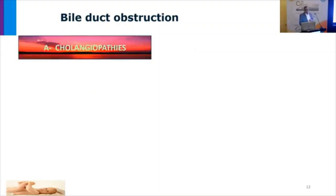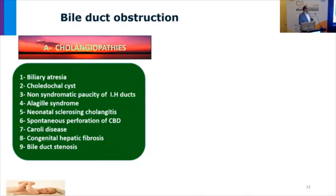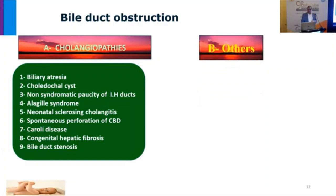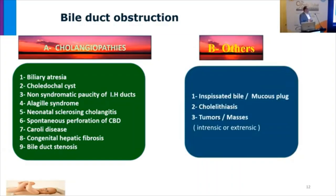Bile ductal obstruction is one of the major causes of neonatal cholestasis. This includes biliary atresia, choledochal cyst, non-syndromatic paucity, syndromatic paucity, bile duct stenosis, Caroli disease, and bile duct perforation. All of these can lead to cholestasis with bile duct obstruction. Others related to bile duct obstruction include inspissated bile, cholestasis, and tumor masses.